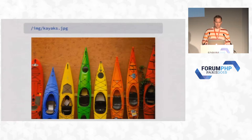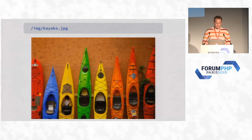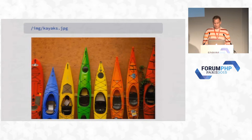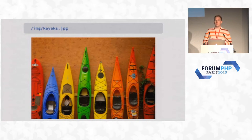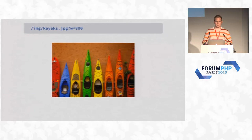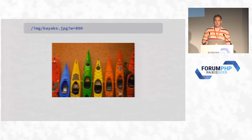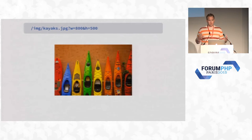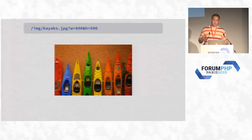I'll give you a few quick examples of the API. Consider you have an image called kayaks.jpg and you want to do something with it. With Glide, you'd pass through w equals 800 for width equals 800, and it's going to automatically resize that image the second you request it. It gets the name from the URL and the manipulation argument from the GET variable. If you wanted to constrain it to 800 by 500, you just pass in the height as well, and by default Glide will constrain it to those sizes.